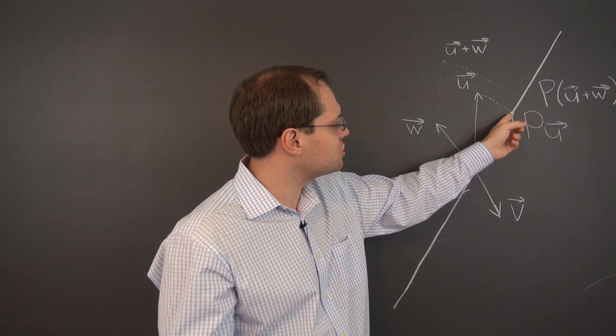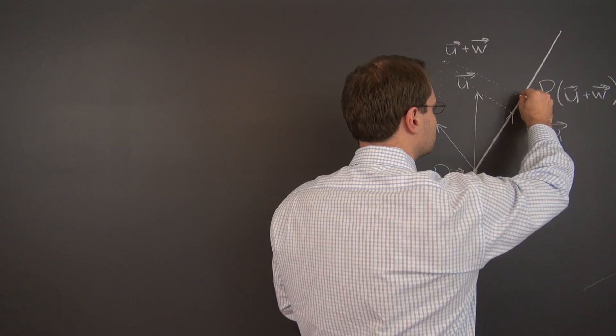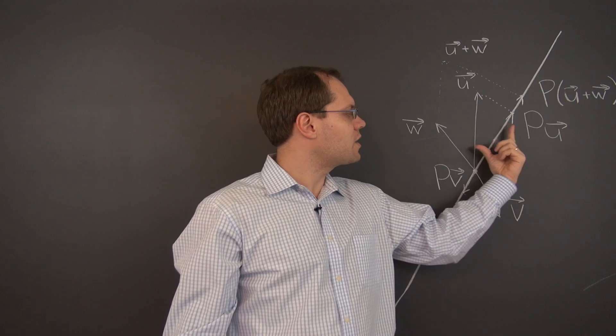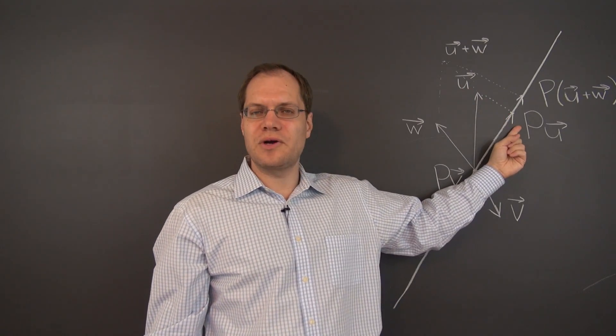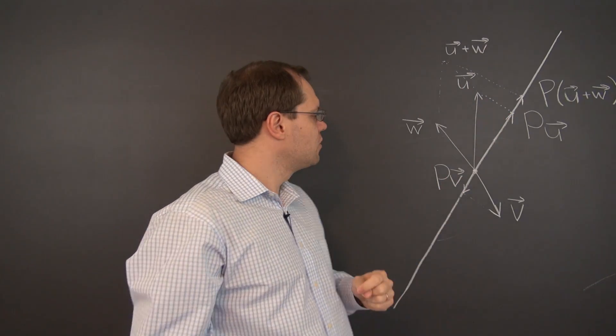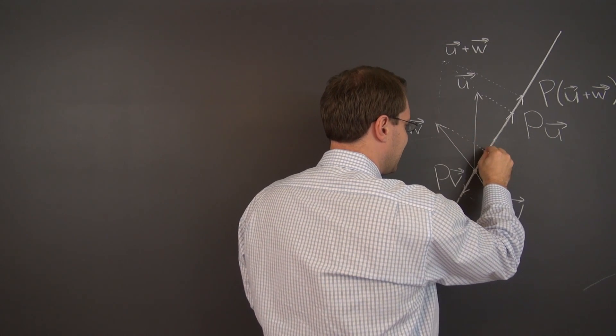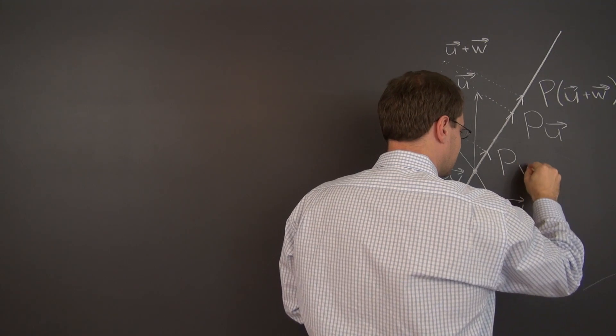Well, we already have the projection of u. Let me draw p of u plus w, just so that we see it as a vector. Okay, so we have already projected u and we have p of u right here. Alright, let's now project w. And here is p of w.